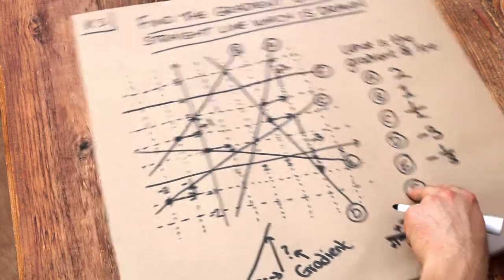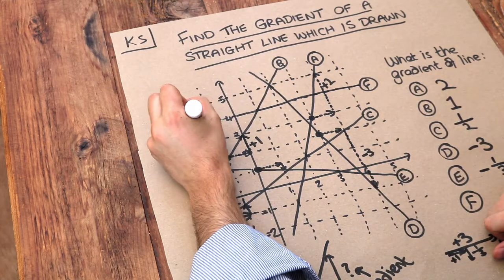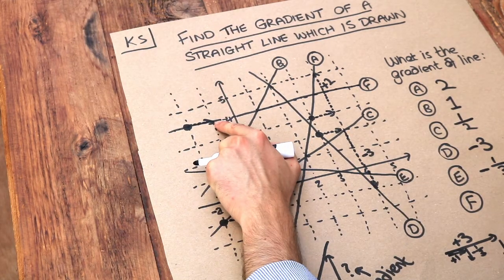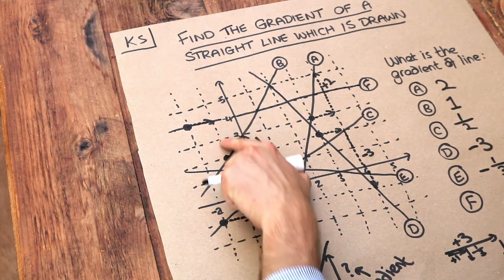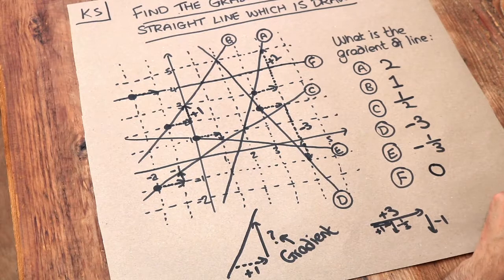And finally F. Can you see this line is horizontal? Well for each square we go one to the right, can you see it's not going up or down. So there's zero movement up or down, and therefore the gradient is going to be zero.